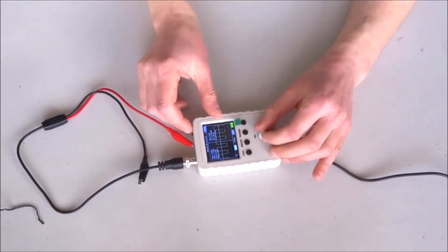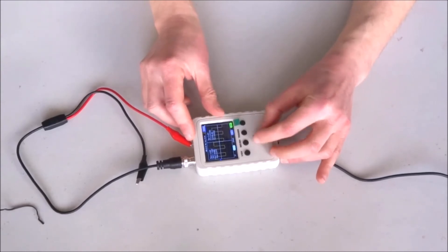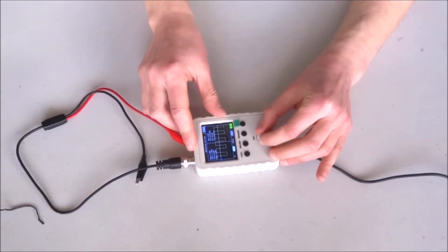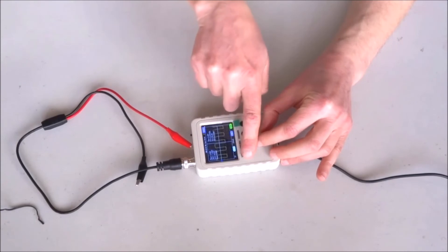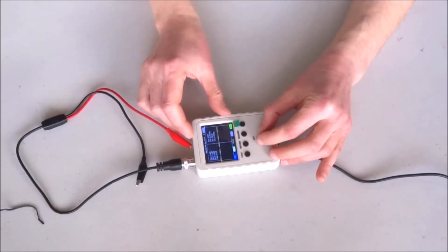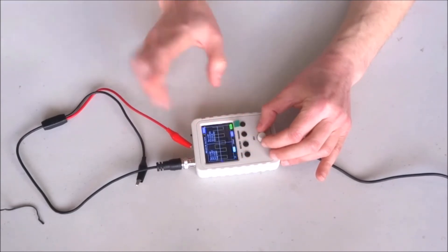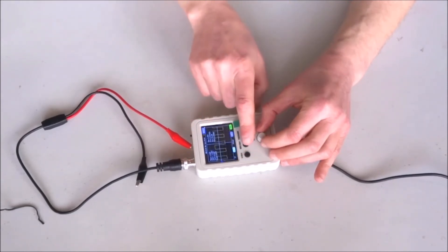But here I can select the position, effectively the offset of the signal if I wish. I can select the division. This is one volt per division, I like it this way for now.